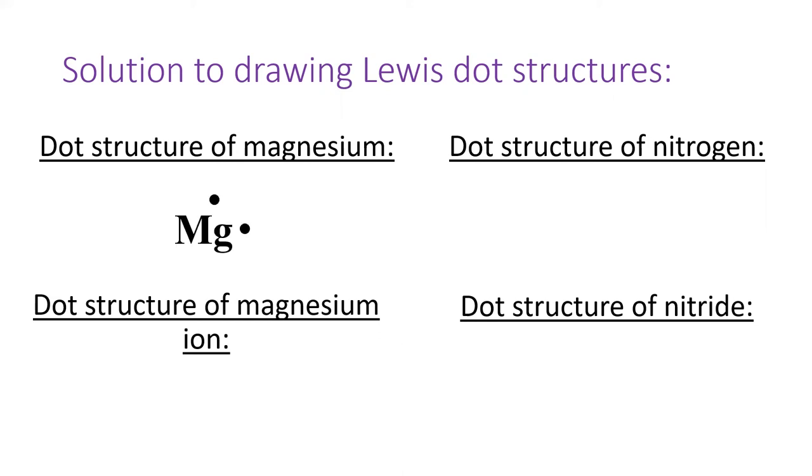Magnesium is in the second column of the table, so it has two valence electrons. We put two dots around magnesium. I put them on the top and the right, but it doesn't matter which side you put them on, top and the bottom, left and the right, left and the bottom. What does matter is that we cannot pair these up.